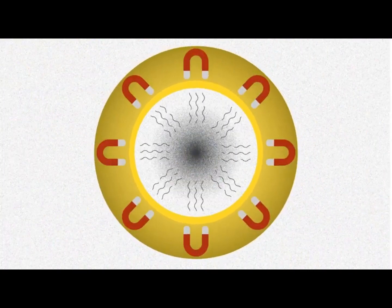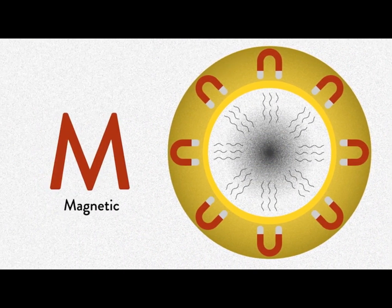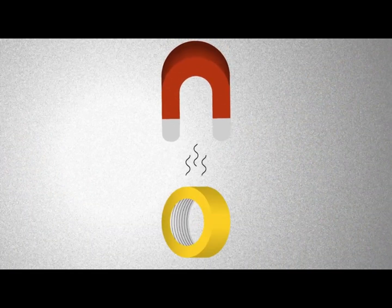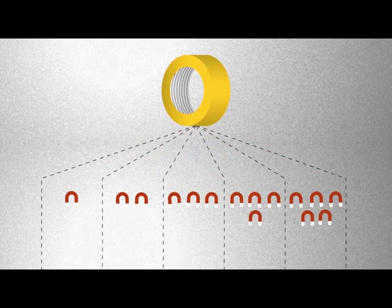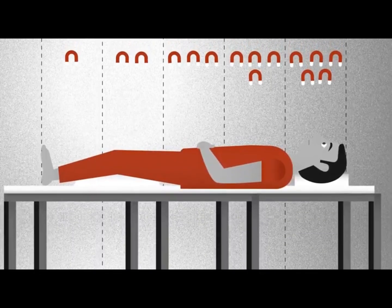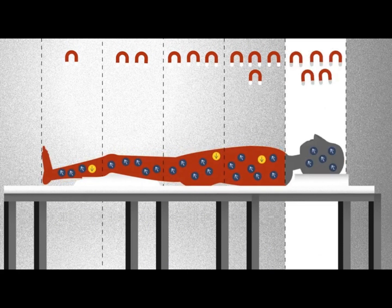The first step in taking an MRI scan is to use a big magnet to produce a unified magnetic field around the patient. The gradient adjusts the magnetic field into smaller sections of different magnetic strengths to isolate specific body parts, for example, the brain.